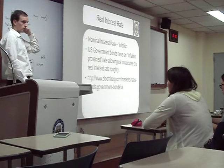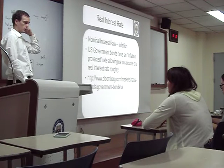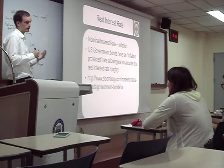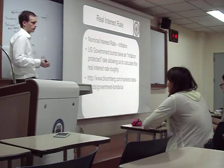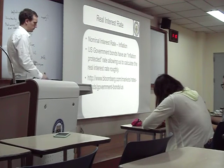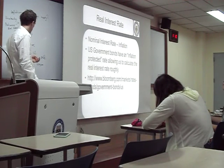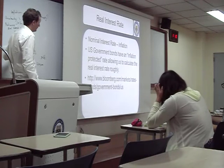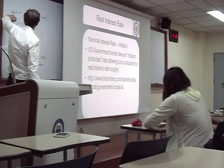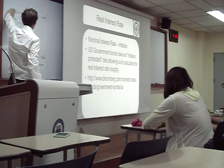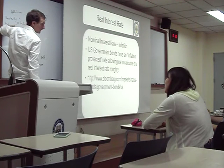Which is more risky — governments or companies? Companies, right? Governments can always tax people, but companies might have problems. So lending money to companies is more risky. For US government 10-year bonds, we only have inflation and the real interest rate — no uncertainty. This allows us to calculate the real interest rate.